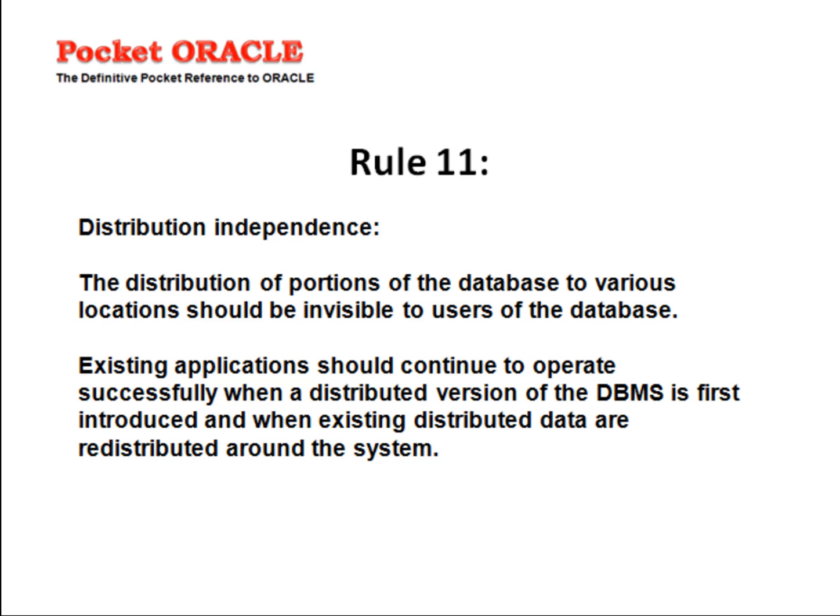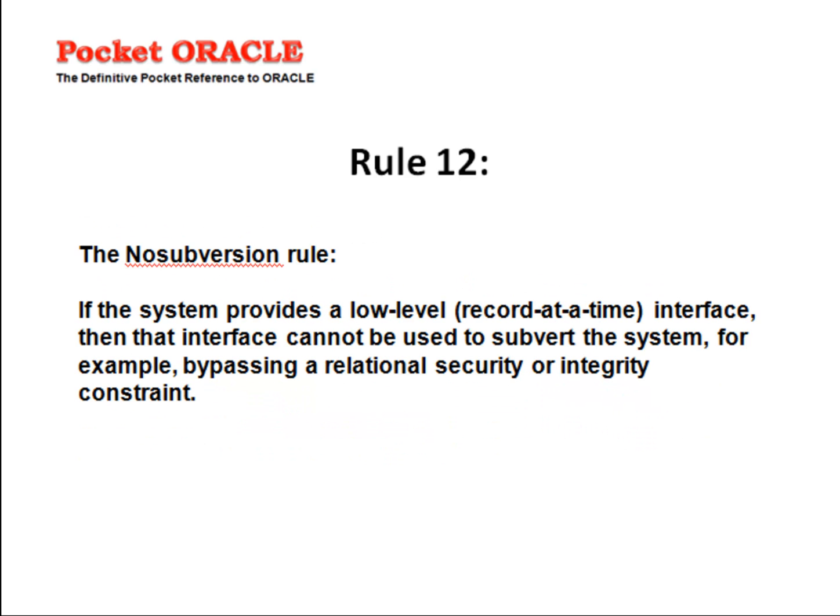It must be possible to change such constraints as and when appropriate without unnecessarily affecting existing applications. Rule 11: Distribution Independence. The distribution of portions of the database to various locations should be invisible to users of the database. Existing applications should continue to operate successfully when a distributed version of the DBMS is first introduced and when existing distributed data are redistributed around the system. Rule 12: The No Subversion Rule. If the system provides a low-level, record-at-a-time interface, then that interface cannot be used to subvert the system.